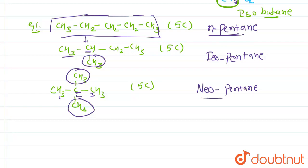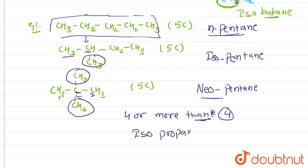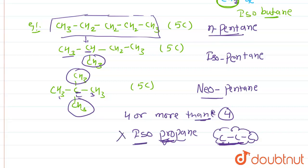So n, iso, and neo are used when the total number of carbon atoms is four or more than four. In this question, you have asked about isopropane. The word root 'prop' indicates three carbon atoms. Since isopropane would have only three carbons, and we cannot use the iso prefix for fewer than four carbons, isopropane is not possible.